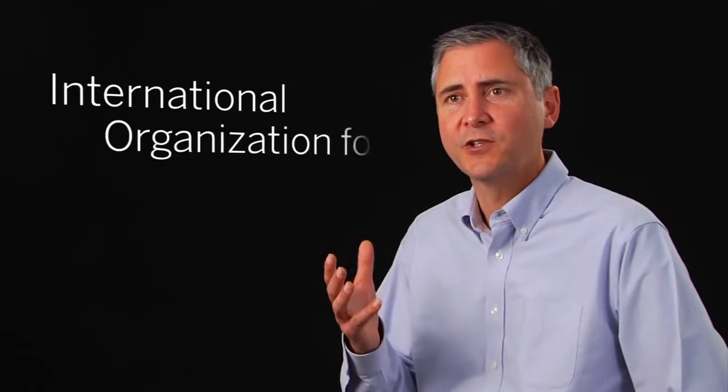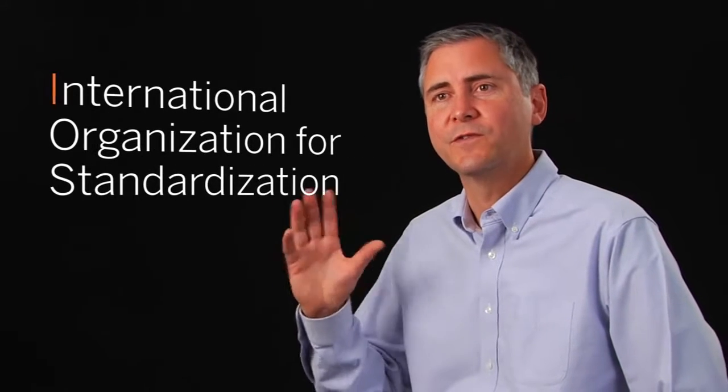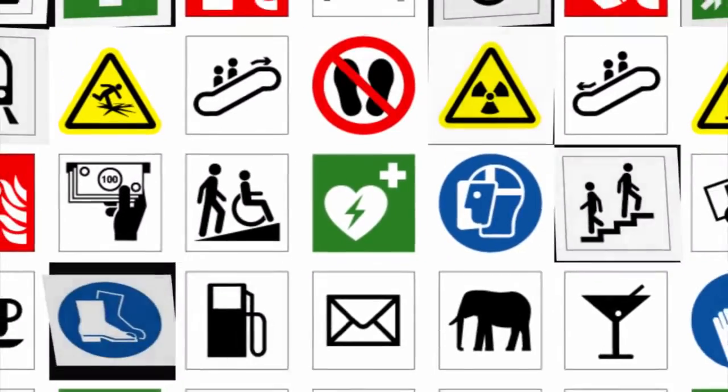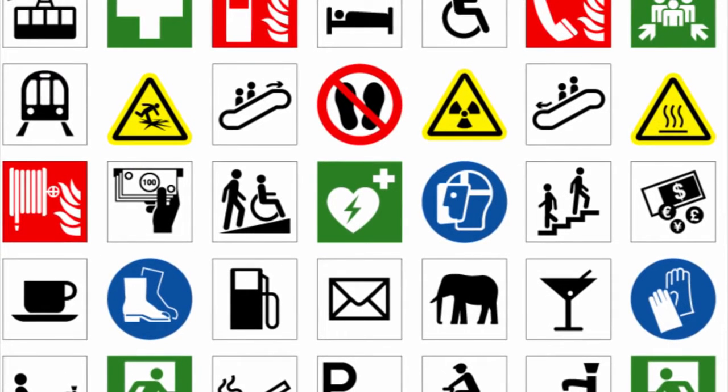ISO stands for the International Organization for Standardization. It's French, and that's why it comes out ISO instead of IOS. The ISO Technical Committee 145 standardizes graphical symbols on a worldwide basis, as well as safety sign formats, safety label formats, colors, and how you integrate symbols and colors onto signage so that safety can be communicated on a worldwide basis consistently.